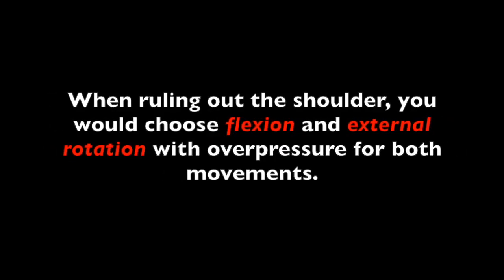The second exception is when you are examining the shoulder as a rule out. The third exception is when you are ruling out a hip — again, you don't choose flexion and extension, but rather you choose flexion and internal rotation of the hip to rule out hip involvement. If those movements are pain free and the patient does not experience any restriction, then you can rule out the joint.